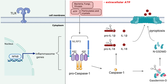Some of these DAMPs include extracellular ATP, monosodium urate, cholesterol crystals, and amyloid beta, which is the peptide that makes up amyloid plaques in the brains of patients with Alzheimer's disease. NLRP3 also senses several environmental irritants like silica and asbestos.